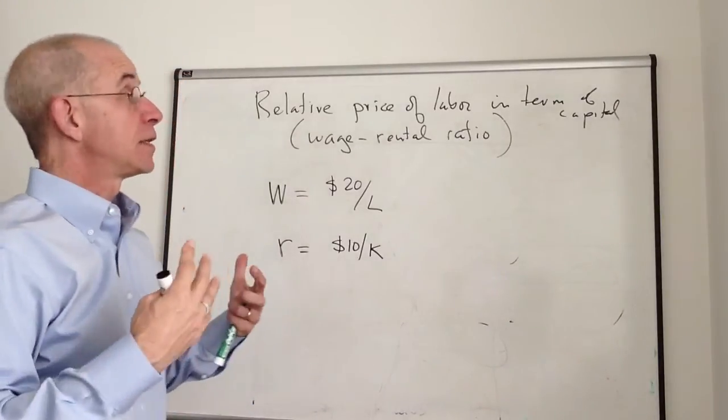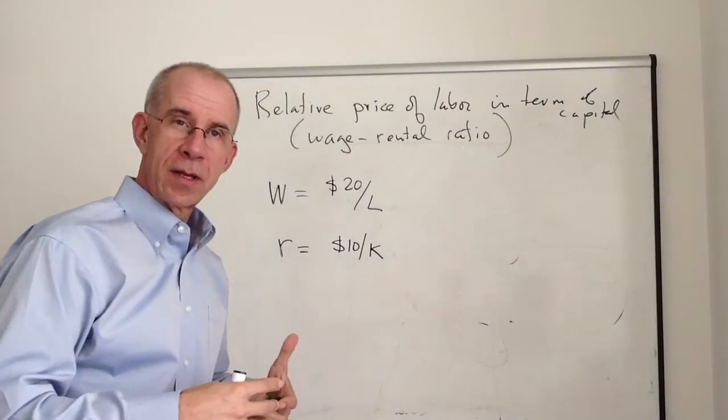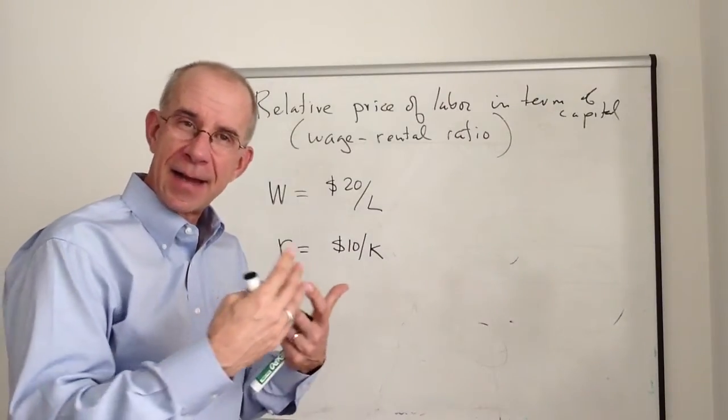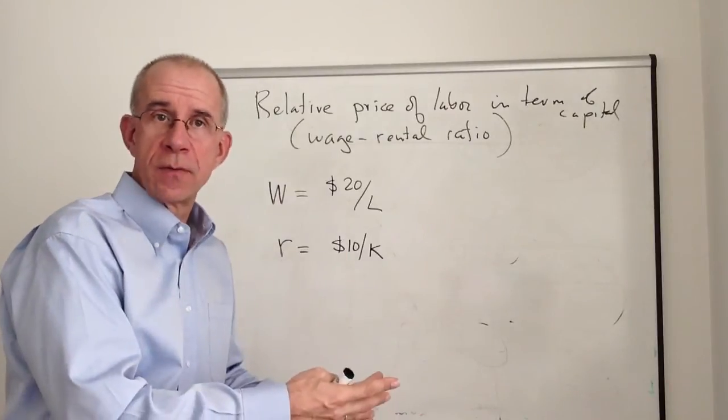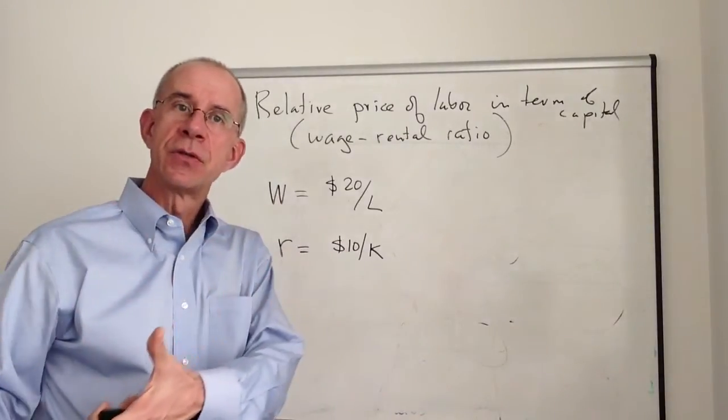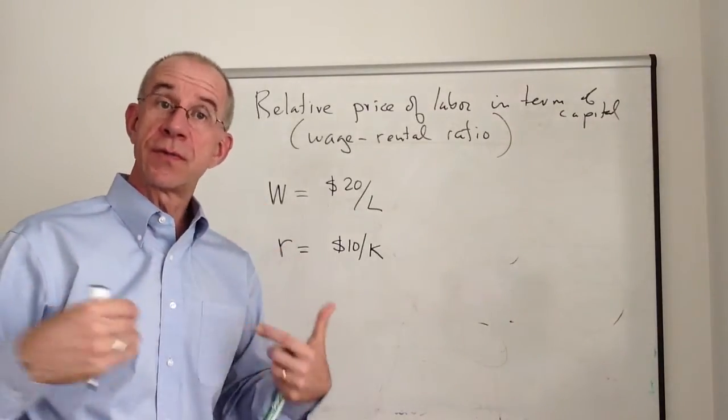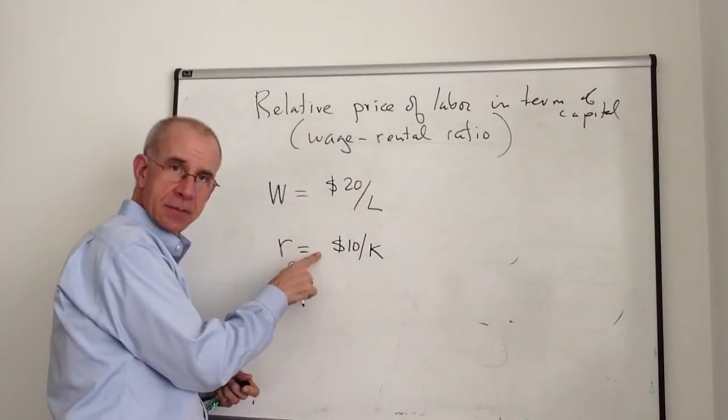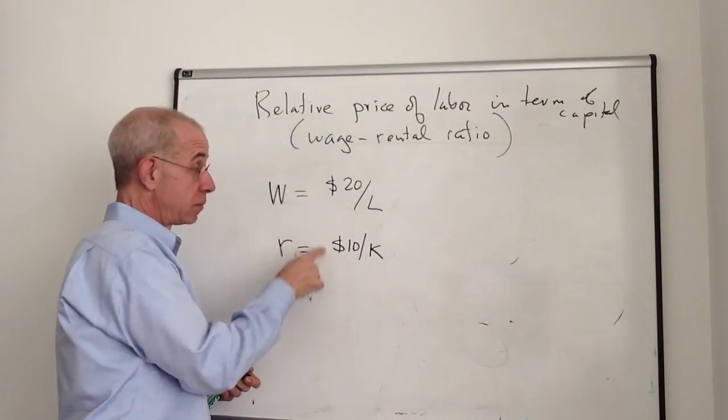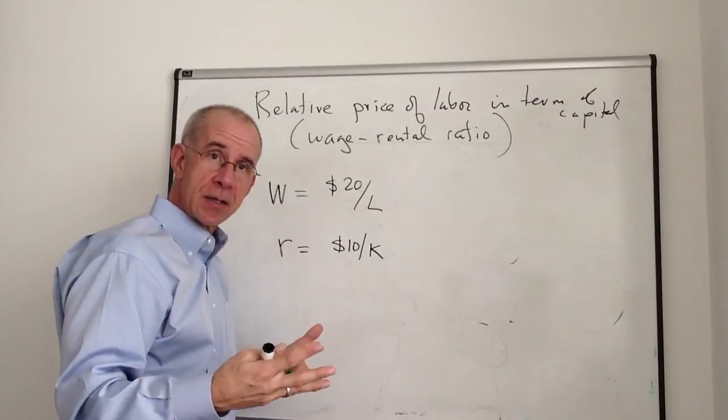The relative price of labor in terms of capital is a way of saying, if I hire as a firm one more unit of labor, how much do I give up in terms of foregone use of capital? Now, if you look at this ratio, or these two nominal prices, you can get some intuition before we look at the algebra.